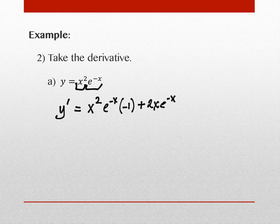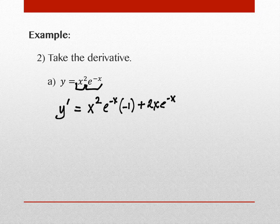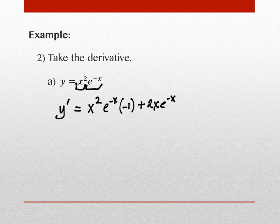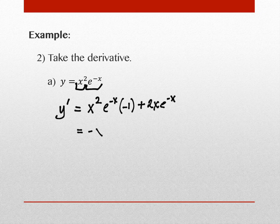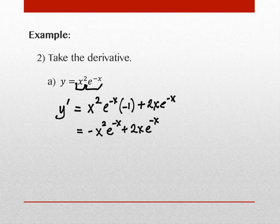Product rule: write the first piece x², then times the derivative of e^(−x). By chain rule, the derivative of e^(−x) is e^(−x) · (−1). Then add the derivative of x² (which is 2x) times e^(−x). Simplified: −x²e^(−x) + 2xe^(−x). Note: on the gateway exam you stop at the unsimplified form; otherwise simplify.